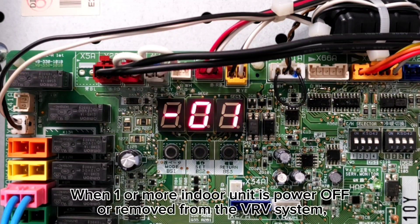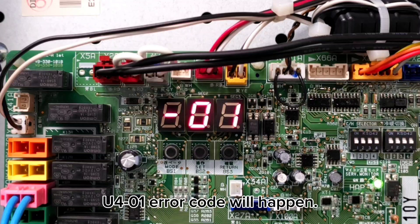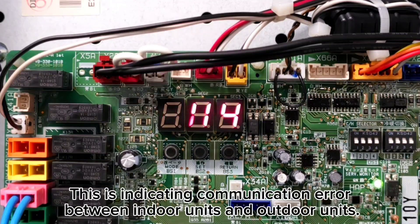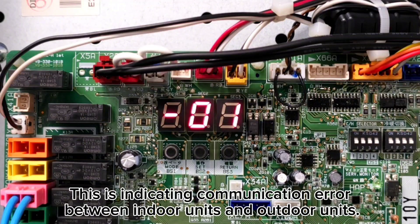When one or more indoor units is powered off or removed from the VRV system, U401 Error Code will happen. This indicates a communication error between indoor units and outdoor units.